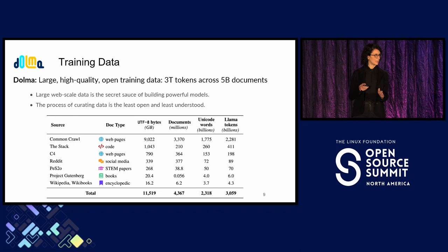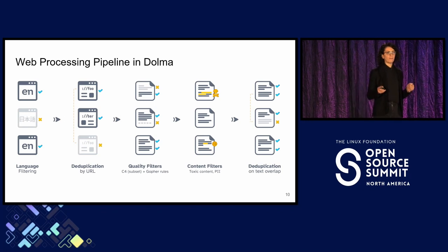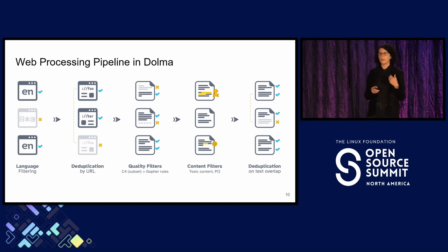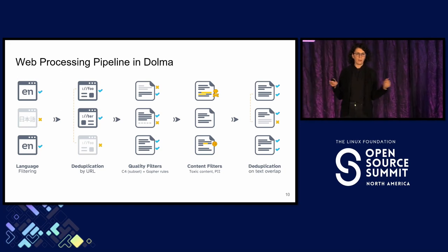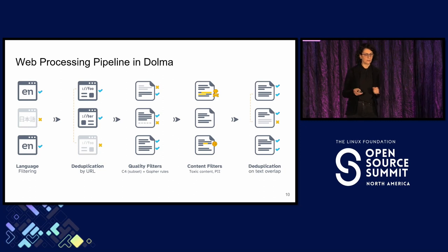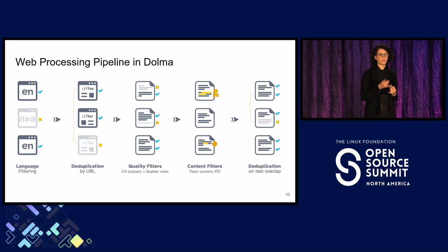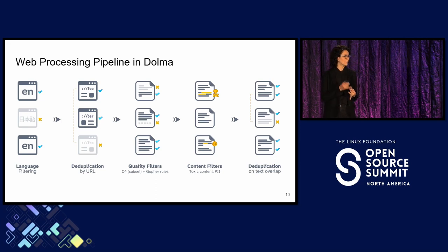We released the second version of this dataset yesterday, and it is of much higher quality. Data in its raw form is not useful for training these types of models — we need to do a few processing steps to make it ready. Since this project is focused on English, our first step is language filtering. Second, we do deduplication for URLs. Then we apply quality filtering steps to remove low-quality sequences. Then we do content filtering to remove toxic content and personal information such as emails and addresses. And finally, we do exact deduplication at the paragraph and document level and also fuzzy deduplication.